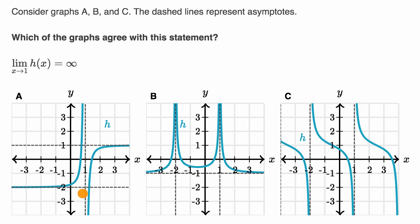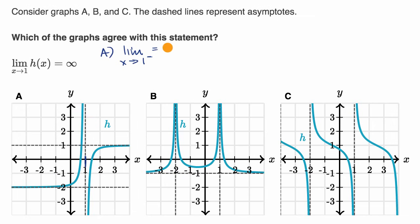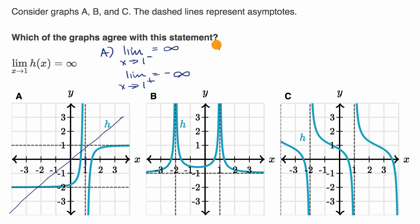Let's go through each of these. We want to think about what happens at x equals one, which is right here on graph A. The limit of h of x as x approaches one from the left looks like it's unbounded in the positive direction — that equals positive infinity. But the limit as x approaches one from the right looks like it's going to negative infinity. Since these are going in two different directions, we can't say the limit as x approaches one from both directions equals infinity. So I would rule graph A out.